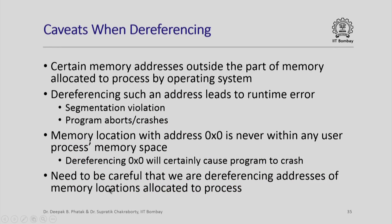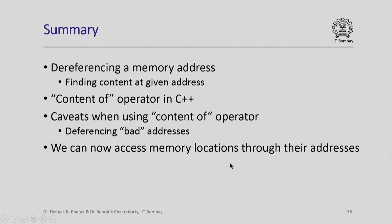There are certain caveats when dereferencing. Some memory addresses are outside the part of memory allocated to a process by the operating system. If you try to dereference such an address you will get a runtime error — messages like segmentation violation or program crashed. In particular, the address zero is never within any user process's memory space, so dereferencing zero will certainly cause a segmentation violation. In summary, this lecture covered how to dereference a memory address, the contents-of operator, caveats when using it, and how to access memory locations through their addresses.